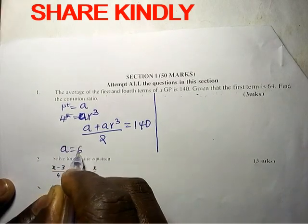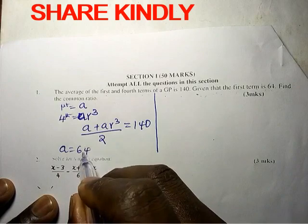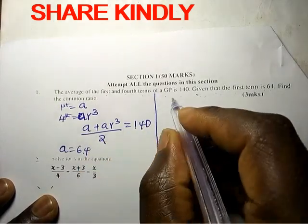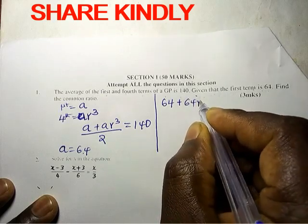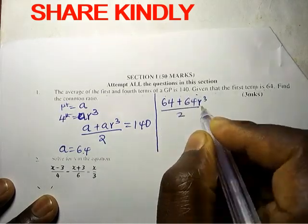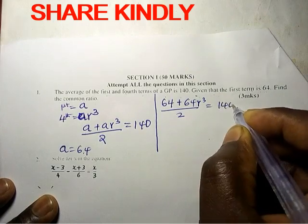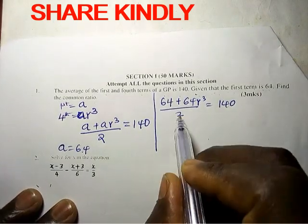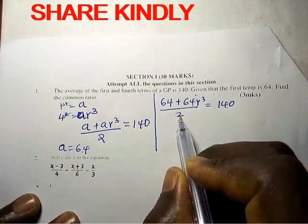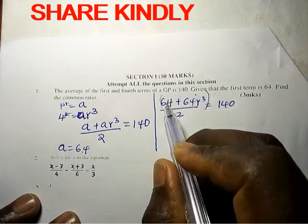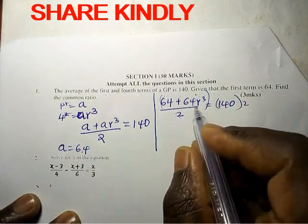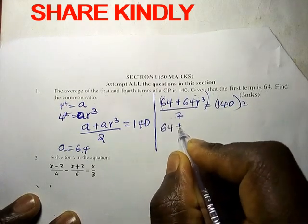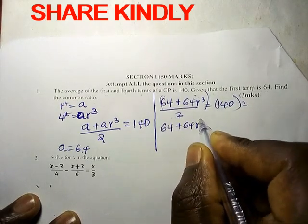Now we substitute 64 for a here. So we are going to have 64 plus 64 r cubed divided by 2 equals 140. We want to remove the denominator, so multiply both sides by 2. If we do that, this will cancel out, so 64 plus 64 r cubed is equal to 280.